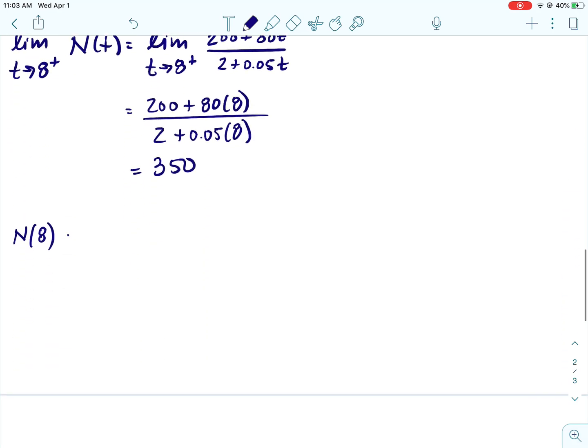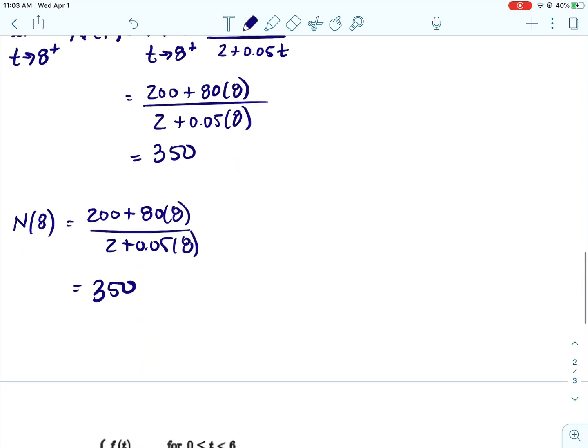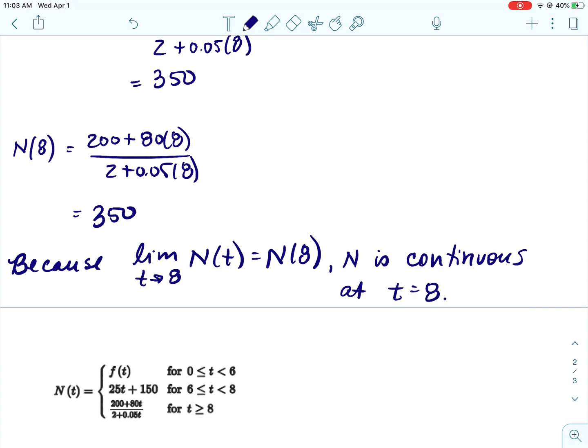And then for continuity, we also need to find N(8). Whenever t equals 8 or equal to, we use this function also. We've already done the work. I would probably take the time to go ahead and rewrite it because I don't know how picky they are about work, but show them everything you know. So we have shown that the limit as t approaches 8 from the left and right is 350. We also have shown that N(8) is also 350, so that means that the function is continuous at t equals 8. So let's just jot that down. Because the limit as t approaches 8 of N(t) equals N(8), N is continuous at t equals 8.